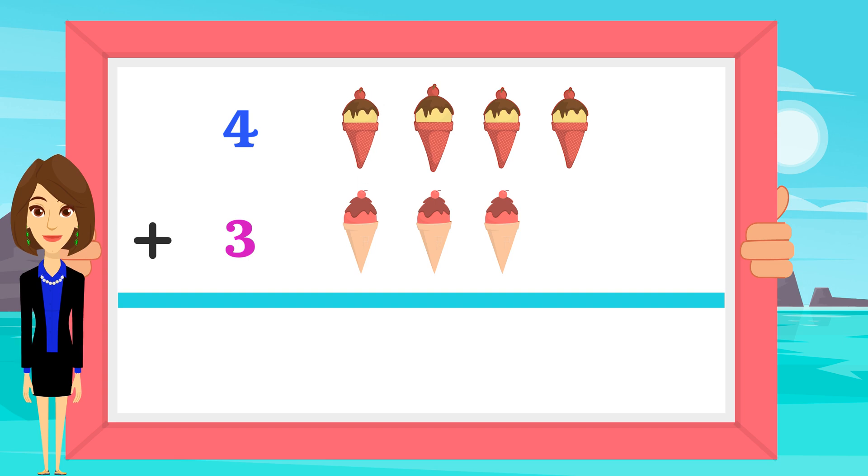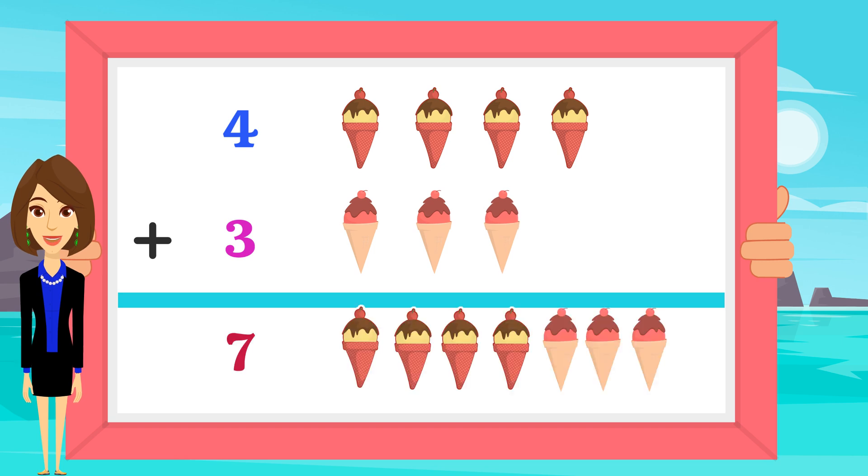One, two, three, four, five, six, seven. There are seven ice creams. Four plus three is seven.